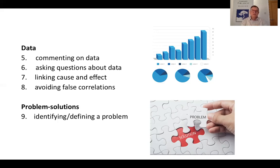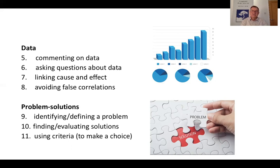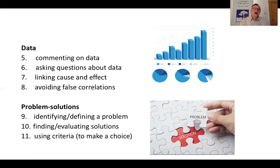Problem-solving is another element: identifying a problem, defining it, finding and evaluating solutions, then using criteria to make a choice. For example, if the problem is that we need to replace a car, we might use criteria such as price, fuel economy, safety record, comfort, and color. We would rank these criteria and decide which is most important. That's how we make an intelligent choice rather than just going with our instinct.